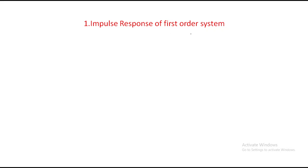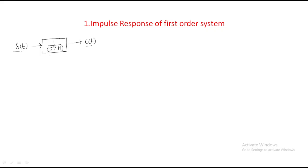Next we will discuss the impulse response of the first-order system — that is, what the output will be when we apply an impulse input to the first-order system. The impulse input δ(t) is applied to the first-order system whose transfer function is 1 by (sτ + 1). We need to analyze how the output behaves.